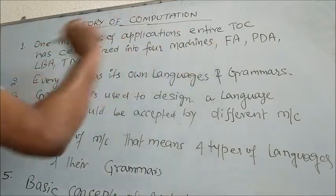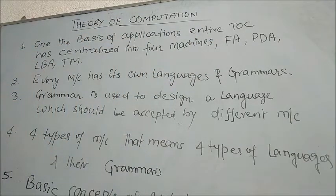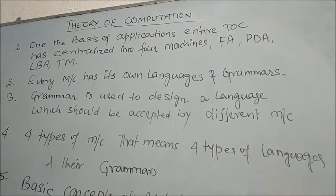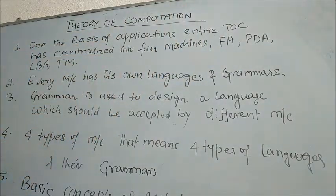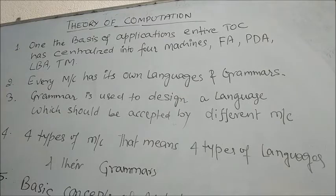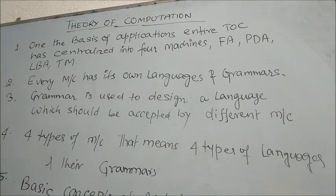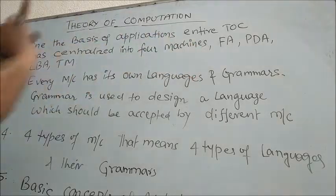The first one is known as FA, that is Finite Automata. The next one is PDA, that is Push-Down Automata. Next one is LBA, that is Linear-Bounded Automata. And the last one is TM, that is Turing Machine. The study of Theory of Computation is centralized to studying these four machines.